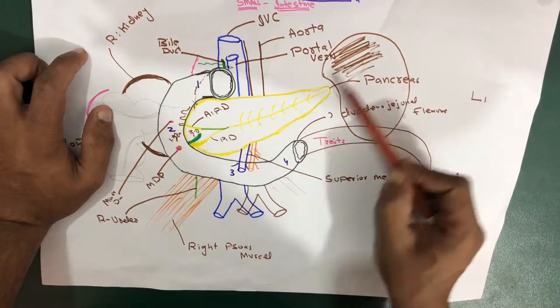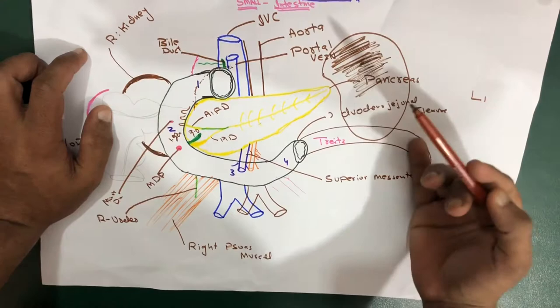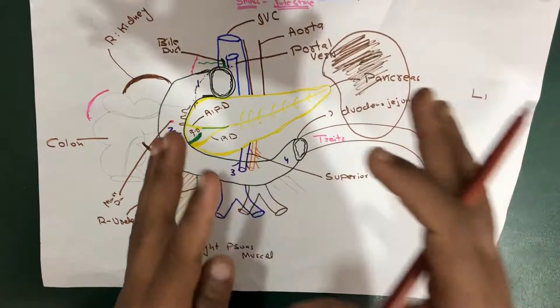So the spleen, which is this organ — this is the pancreas, this is the spleen, this is the duodenum. The spleen is actually an organ that is located in the upper left of the abdomen, and we are talking about the anatomy of the spleen.